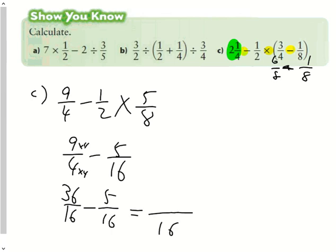Remember, with subtraction, it's different than multiplication. Subtract your numerators and keep your denominator. Your final answer is 31 sixteenths or 1 and 15 sixteenths.